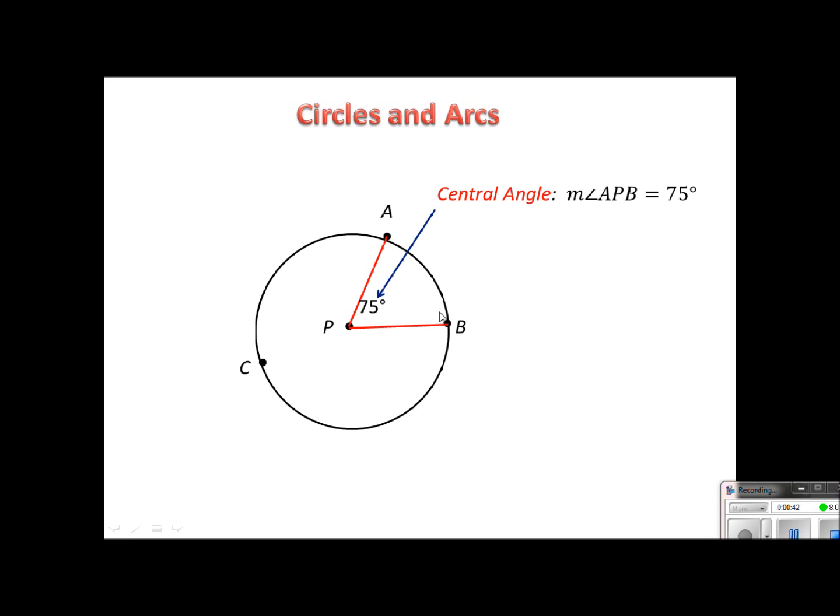Now something new is that this, from here to here, is called an arc and it always has the same degree amount as the central angle. So the arc that is straight across from the central angle has the same degree. We can measure this arc in degrees, and remember the whole circle is 360 degrees, we're just taking a portion of it and labeling it in degrees.